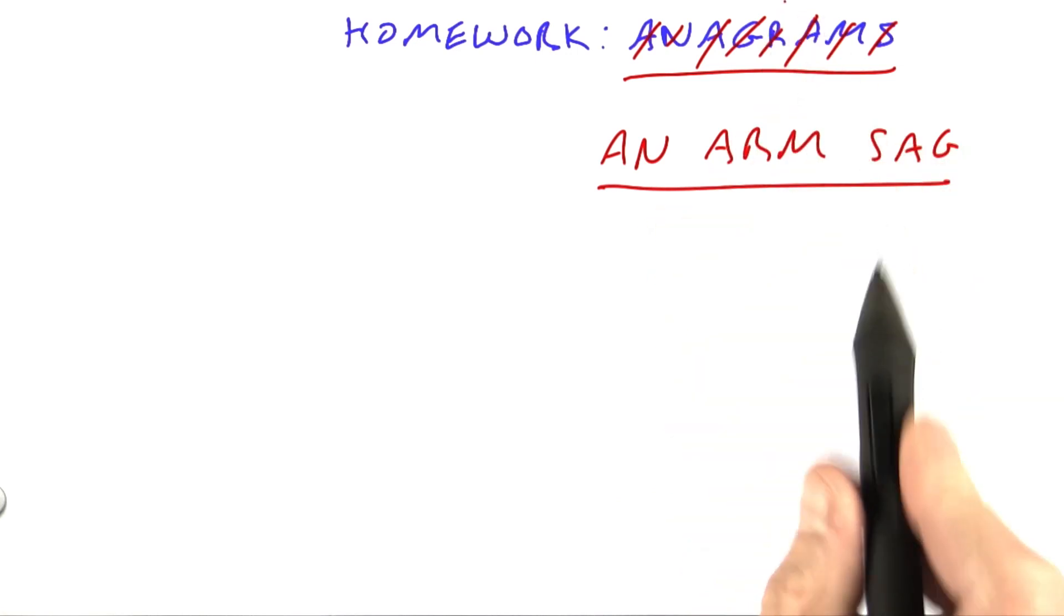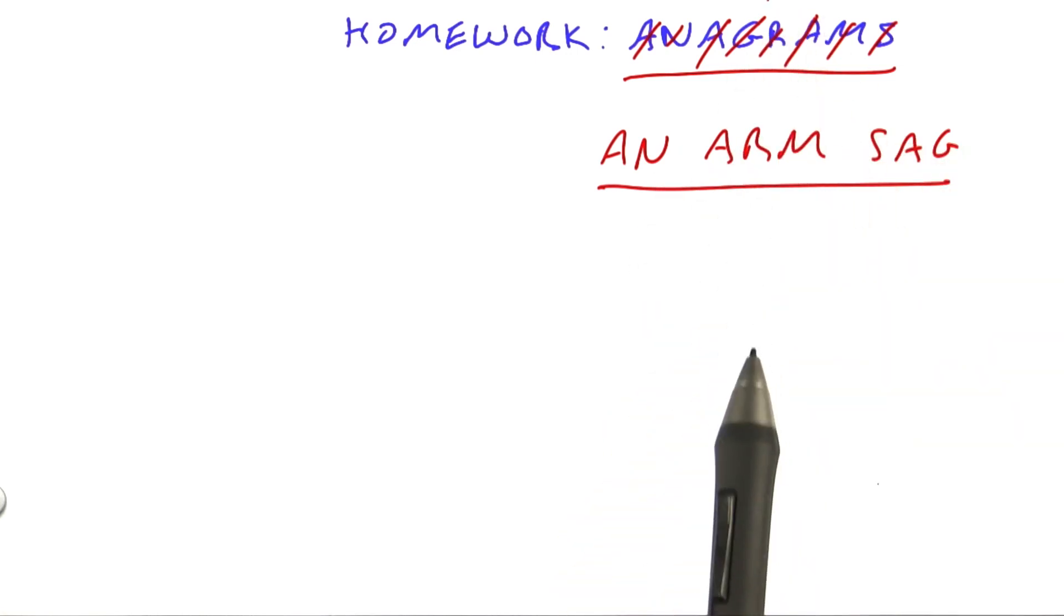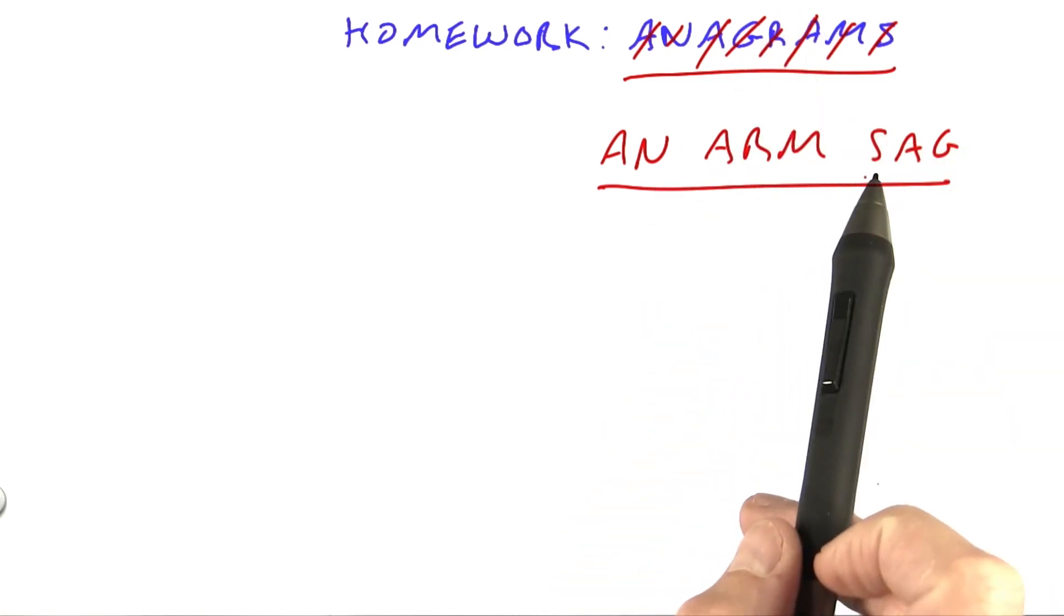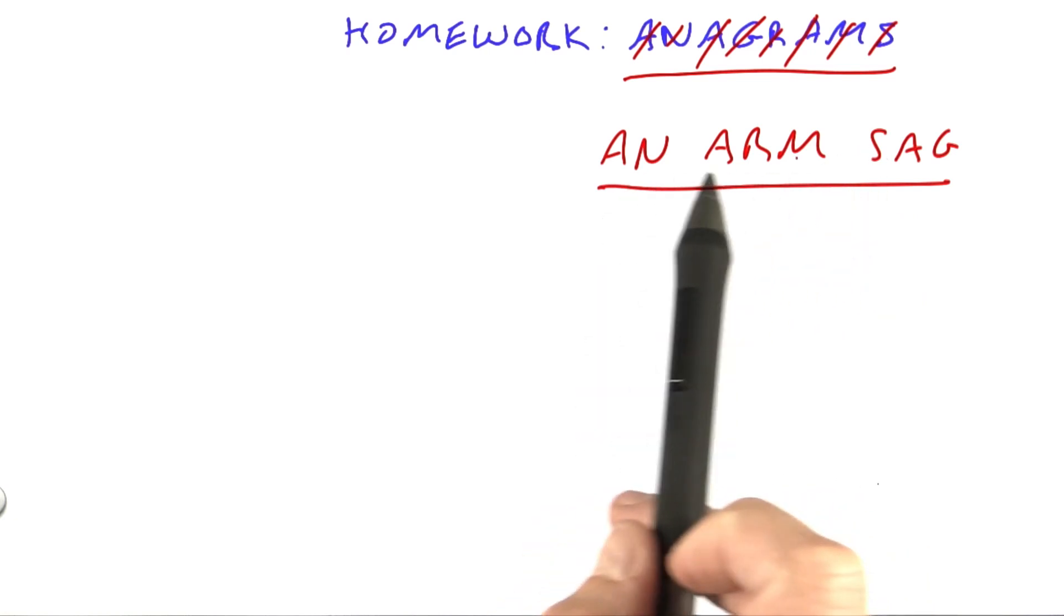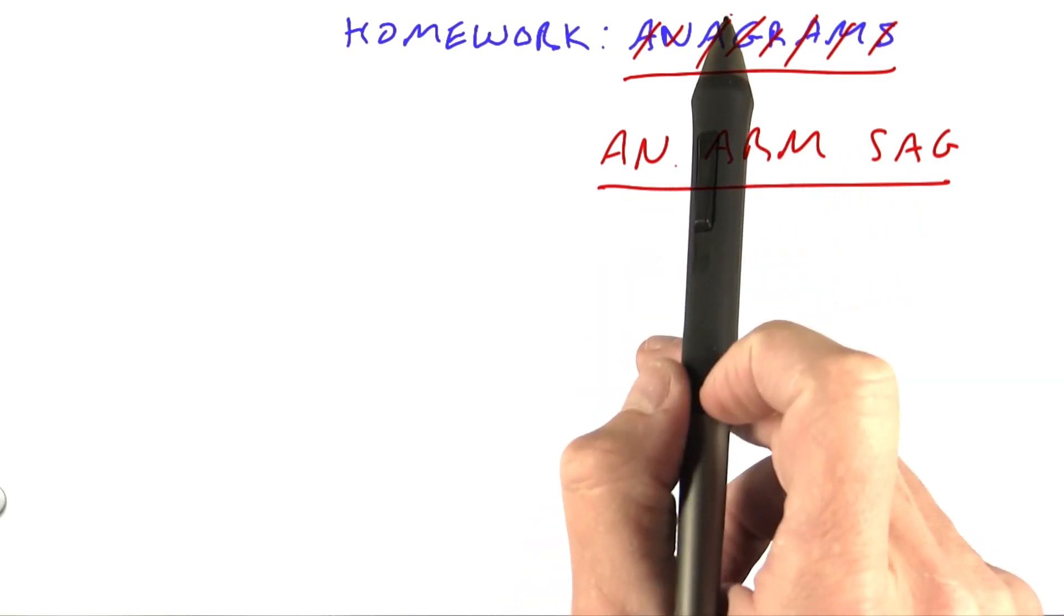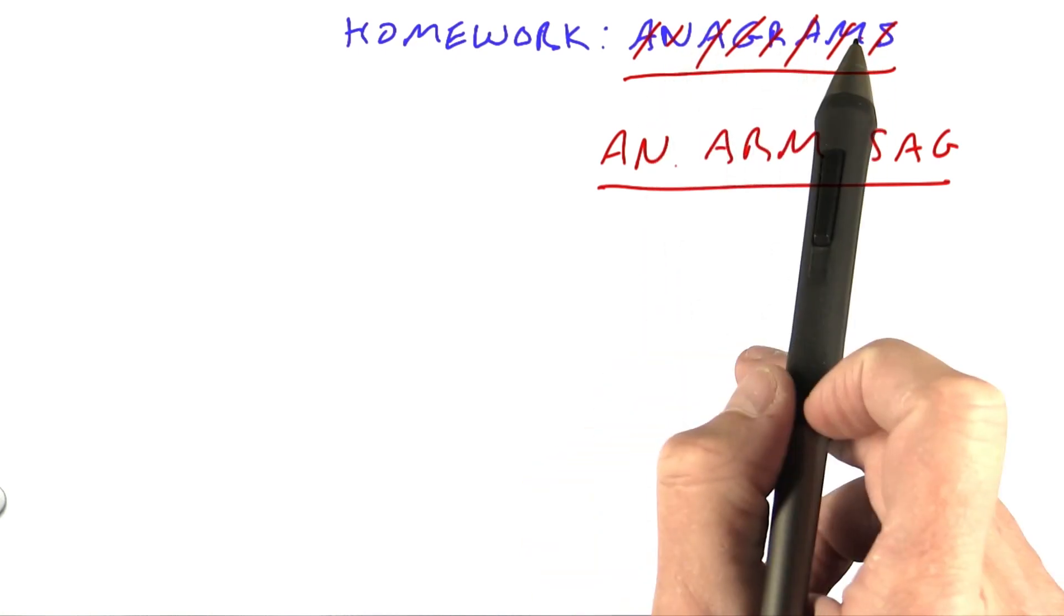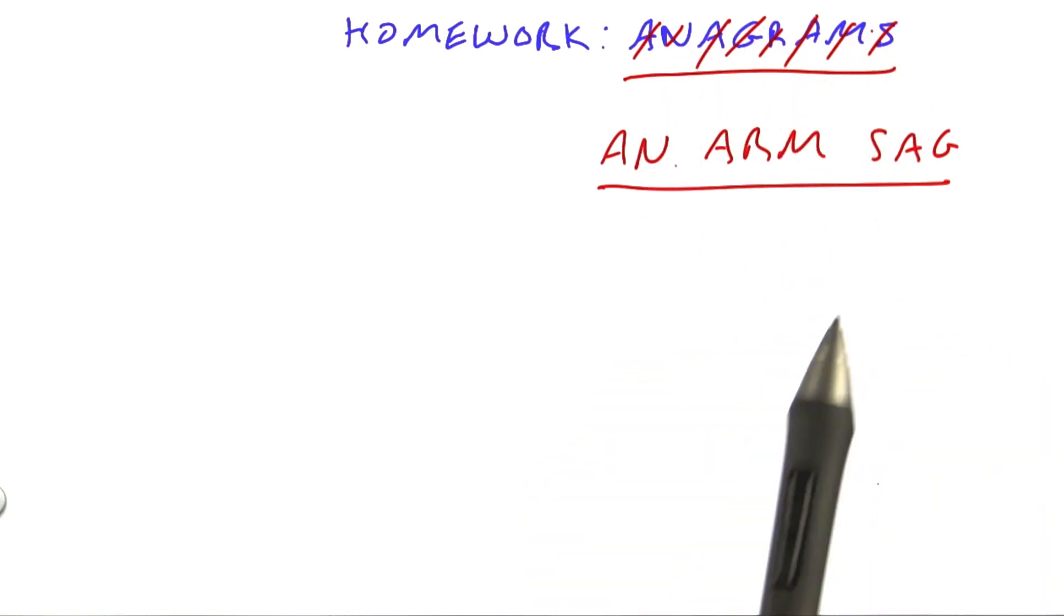This phrase is an anagram of that one because it uses all and no more of the letters. It's okay to have extra spaces in between the words. There could have been extra spaces, it could have been a multi-word phrase. Spaces don't matter, just that you use up all the letters.